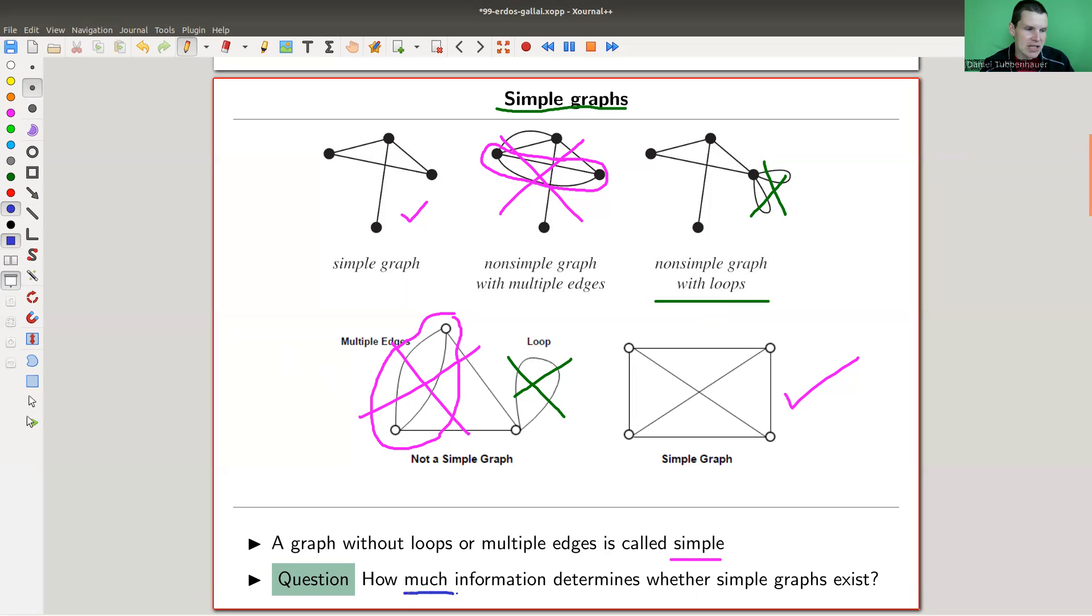And the question I would like to address, or the theorem that I'm going to explain actually addresses, is how much information, right, the secrets of numbers, how much information actually determines whether simple graphs exist in a certain way. Okay, so that's a question I would like to address and stay tuned. The answer is pretty darn amazing.